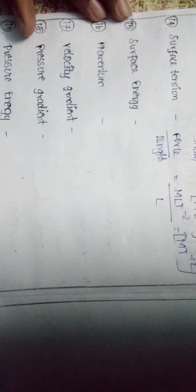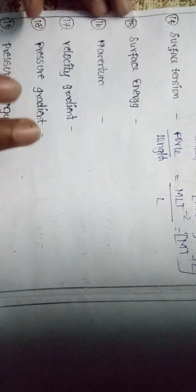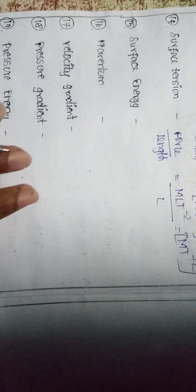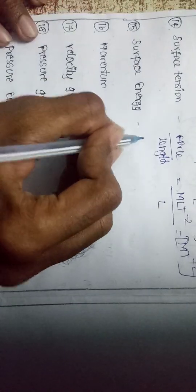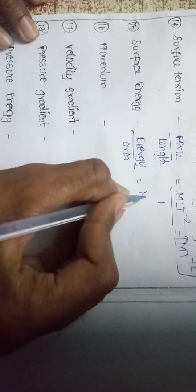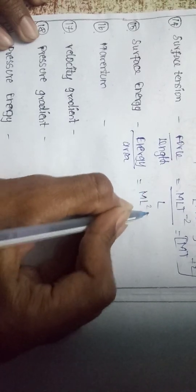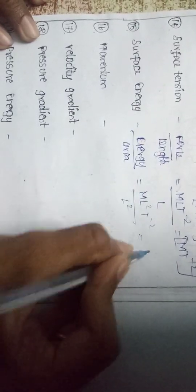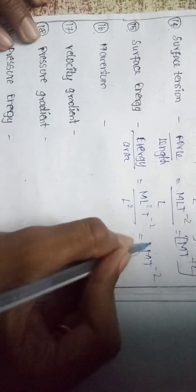Surface energy is energy by area. Energy is M L² T⁻², area is L². L² cancels with L², giving M T⁻². So surface tension and surface energy have the same dimensional formula: M T⁻².